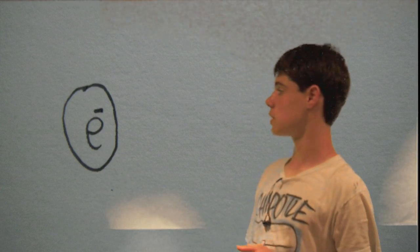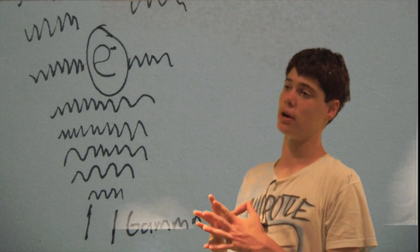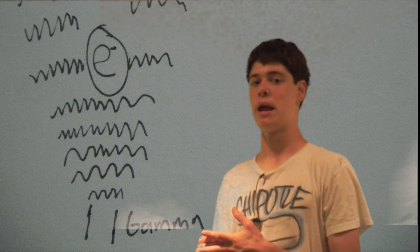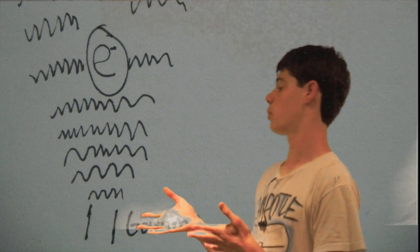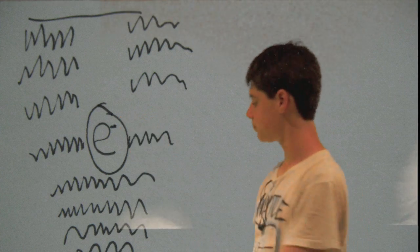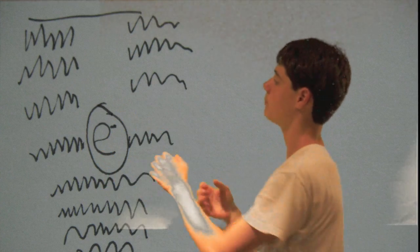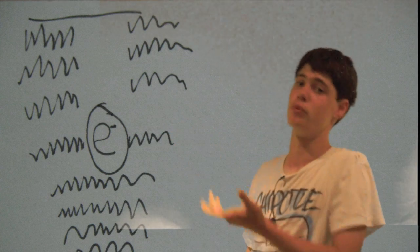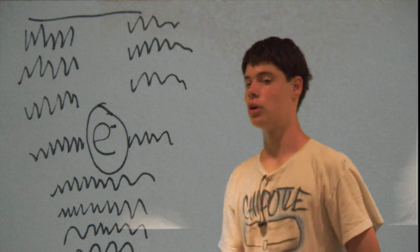To measure the position of an electron as precisely as possible, we have down here a gamma emitter. Gamma waves have the shortest wavelength of all the electromagnetic spectrum, so we emit the shortest wavelengths possible to get the least error in our measurement. Up here we have a detector that will measure where the gamma waves hit. The gamma waves are emitted, go up, hit the electron, scatter off it, and we'll have a detailed picture of exactly where our electron is. We'll know its position almost exactly, with about twice the wavelength of a gamma ray as our error.